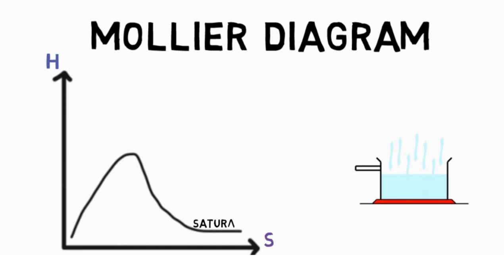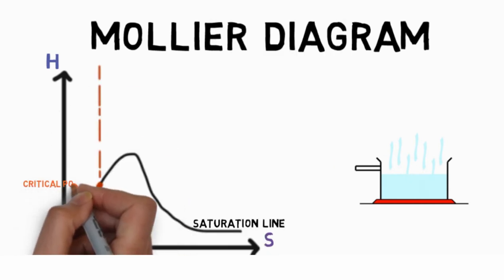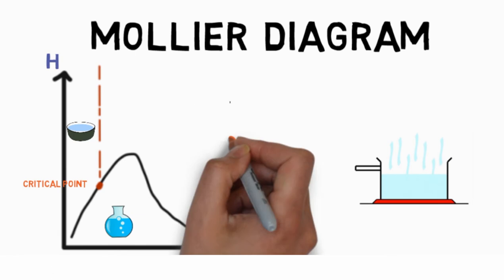The bowl line is a saturation line above which all is either liquid or vapor and below which is a liquid vapor mixture. To the left of critical point is liquid and to the right of it is vapor.